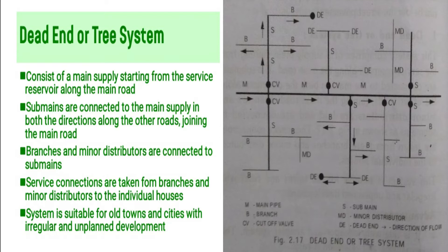Sub-mains are connected to the main supply in both directions along the other roads joining the main road. From the sub-mains, branches and minor distributors are provided. Service connections are taken from branches and minor distributors to the individual houses.